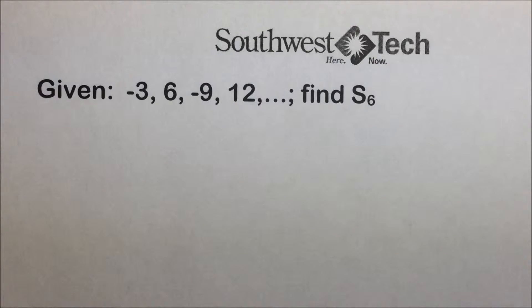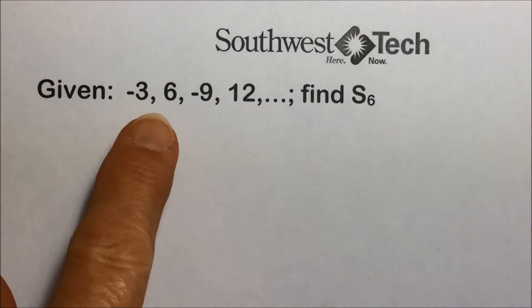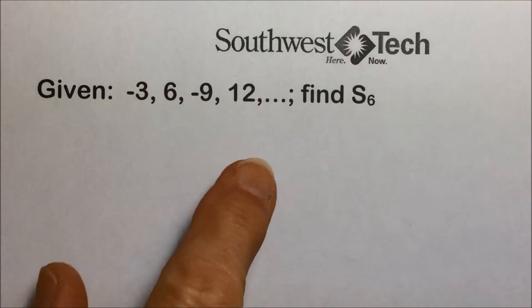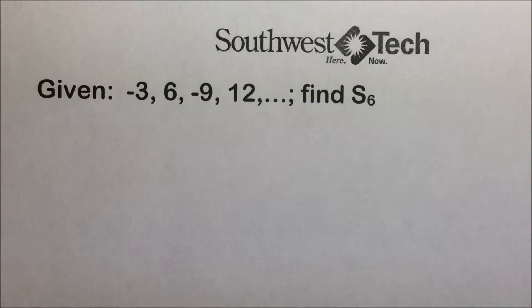Intermediate Algebra section 11.1. When we're given an infinite sequence, and you can see here on the screen we have a sequence of numbers, and with the ellipsis it means dot dot dot that it's continuing on. If we add those terms together, it's called an infinite series.